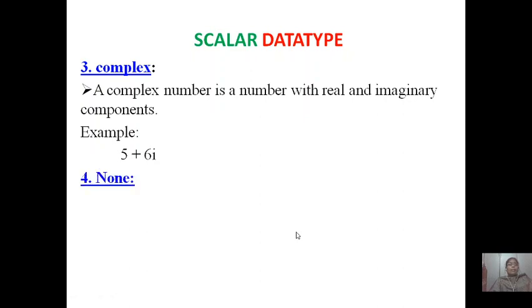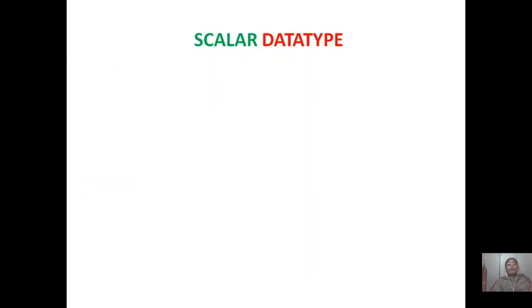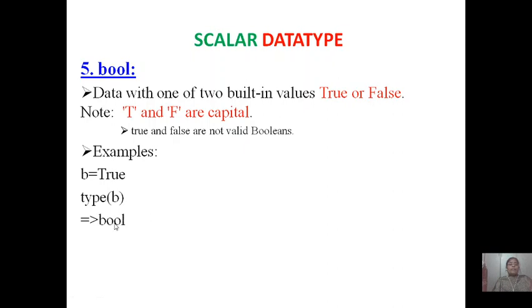Next one none. None means if you are using in C we said void - void means nothing. Similarly here, none in Python represents a null object. And the next one is bool. Whenever you are saying bool, it means boolean value - either true or false. But here there are two built-in values: capital TRUE and capital FALSE. You cannot keep T as a small letter and F as a small letter. That time it will not be a valid boolean value. So if B equals capital TRUE, that means true. And type of B, if you are asking, it will say it is a boolean data type.